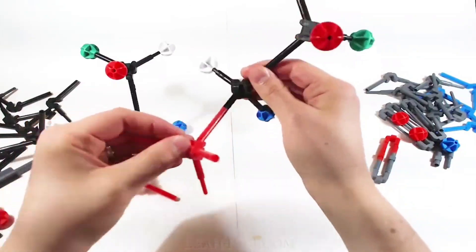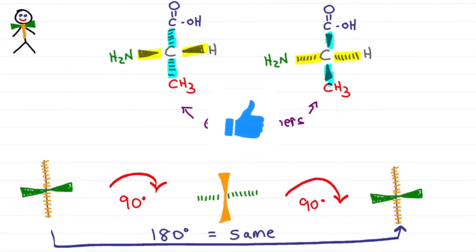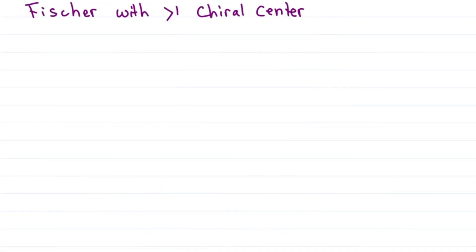If you're done with time-wasting model kits for Fischer projections, give this video a thumbs up. But what if you have more than one chiral center? Given 3-bromo-2-butanol with two chiral centers, can you quickly turn it into a Fischer projection?